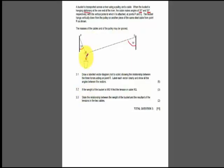Question 3.1 says, draw a labelled vector diagram, not to scale, showing the relationship between the three forces acting on point R. Label each vector clearly and show the angles between the vectors. So a lot of you just drew the vector down, the vector up and the vector up and that was it. But that doesn't really help you because it doesn't show the relationship between the three vectors.